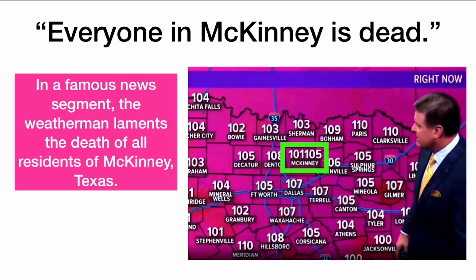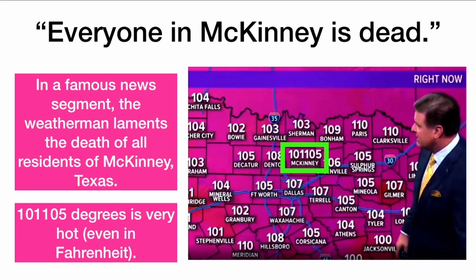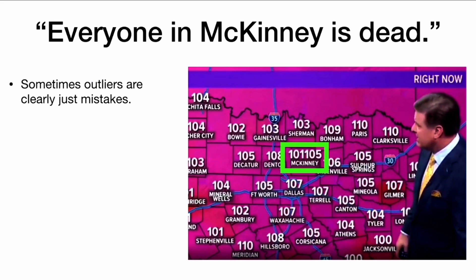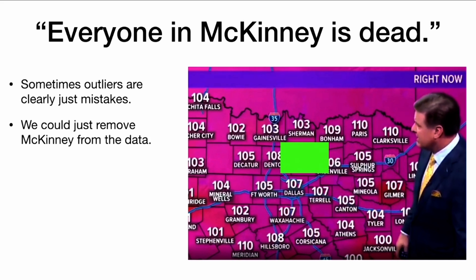There's a famous news segment on YouTube where the weatherman laments the death of all residents of McKinney, Texas, because it is 101,000 degrees, which is very hot, even in degrees Fahrenheit. So sometimes outliers are clearly just mistakes — they mis-entered the data. We could just remove McKinney from the data set, and then we don't have to think about that temperature anymore.